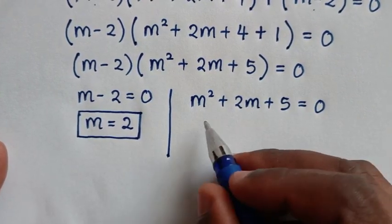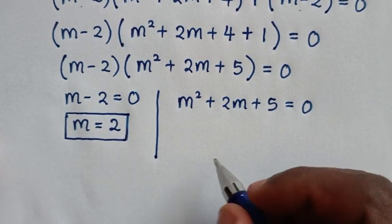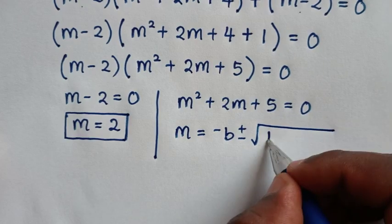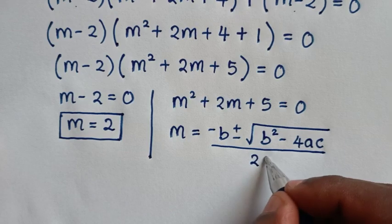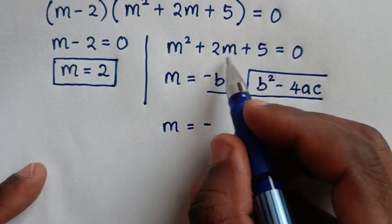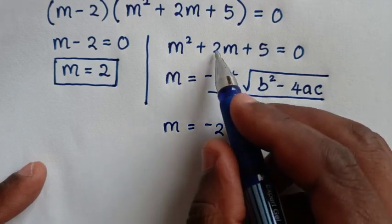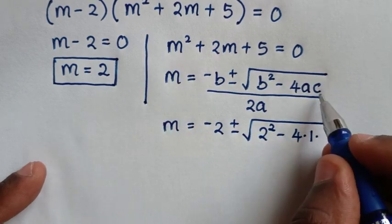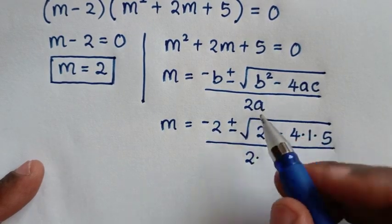To solve the quadratic equation m² + 2m + 5 = 0, we use the quadratic formula: m = (-b ± √(b² - 4ac)) / 2a. Here b is the coefficient of m, which is 2; a is the coefficient of m², which is 1; and c is the constant, which is 5.